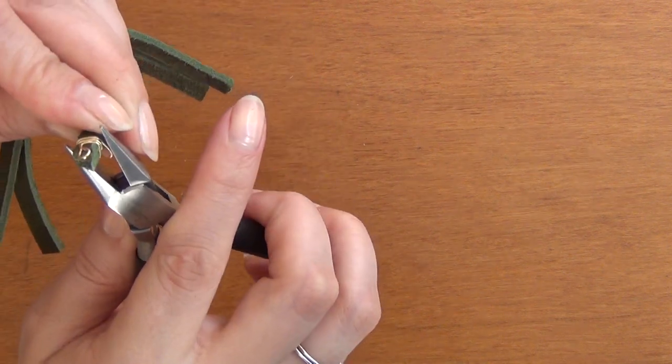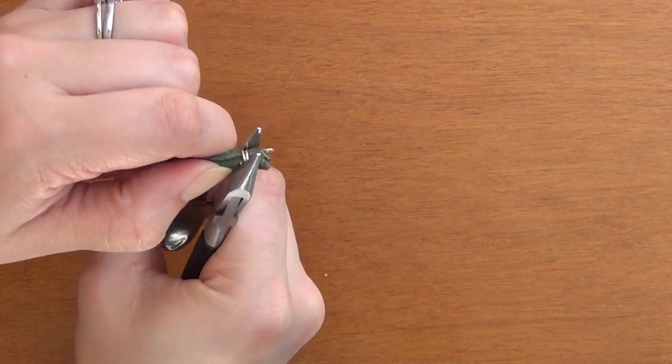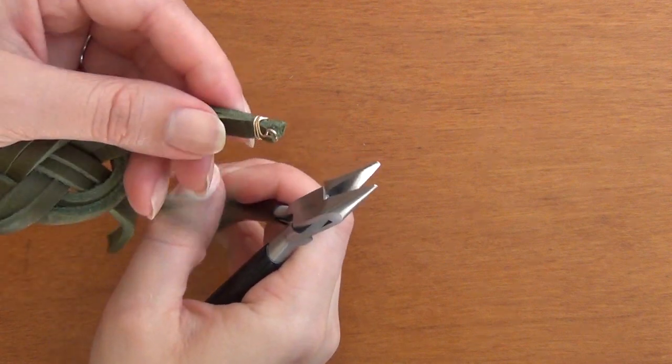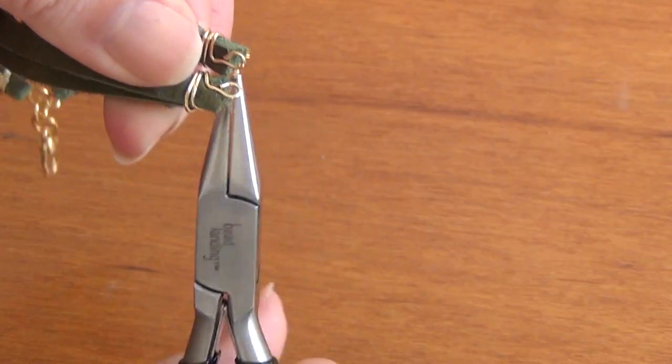Once you've wrapped your cord completely around your bracelet, you'll want to make sure that the very end of the pin is sticking into the bracelet so it's not going to scratch your wrist. Then give it one last really good pinch and make sure nothing is going to slip out.